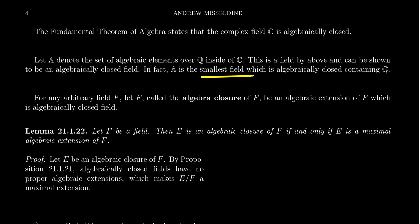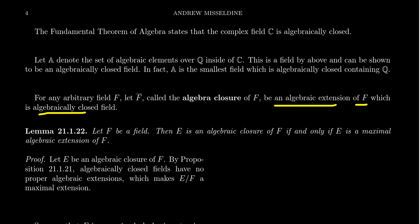For an arbitrary field F, we define F-bar to be the algebraic closure. That is, F-bar is an algebraic extension of F which is an algebraically closed field. We'll see that up to isomorphism only one such field can do this. An algebraic closure is by definition an algebraically closed algebraic extension of F. We're claiming that the field A is the algebraic closure of the rational numbers — the set of all algebraic numbers over the rationals.